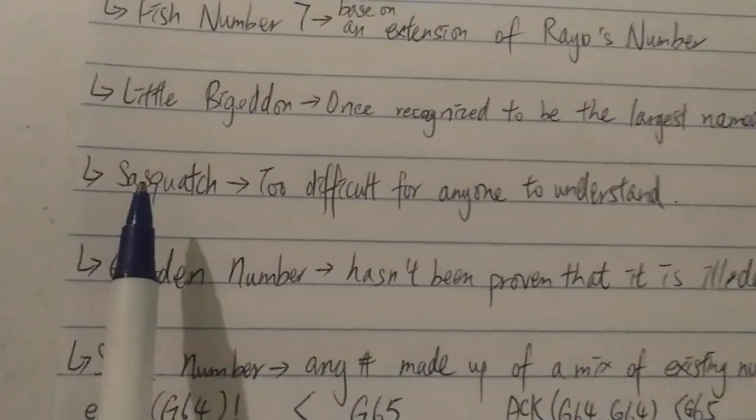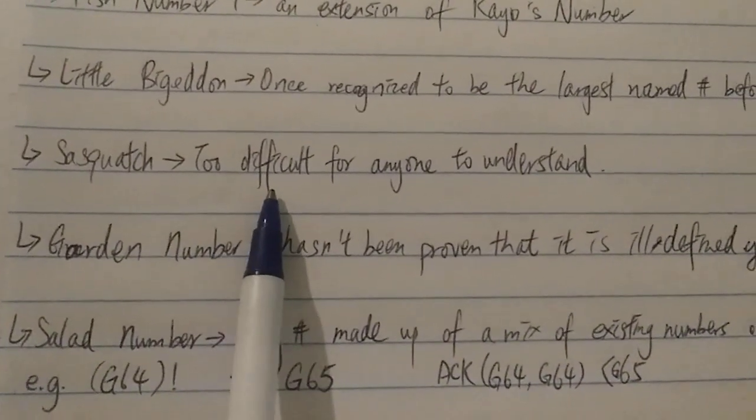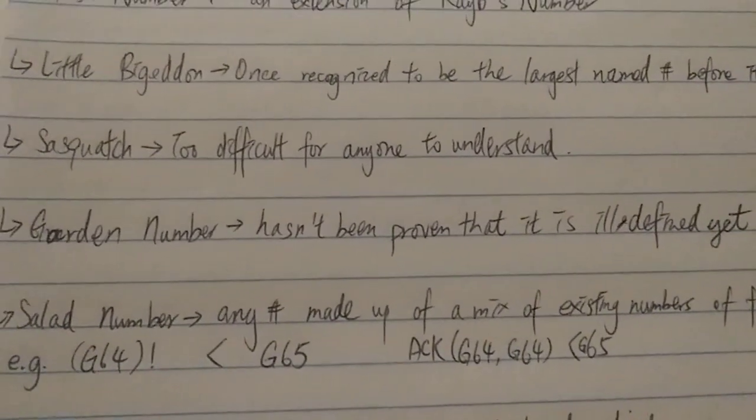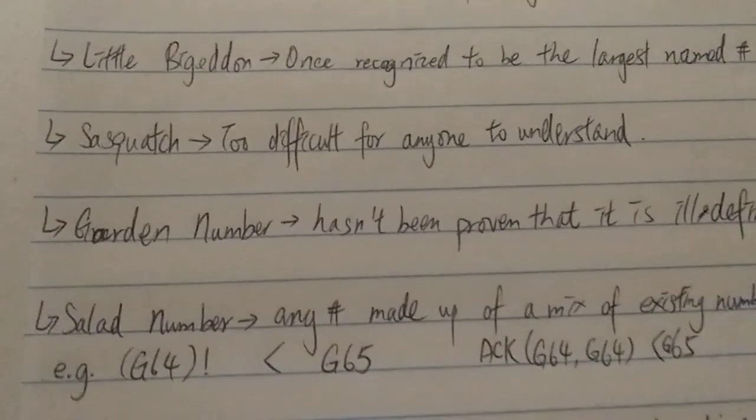And then you have Sasquatch. This one is actually too difficult for anyone to understand what it actually is. So that is why it's not generally accepted as the biggest named number.